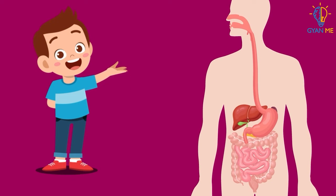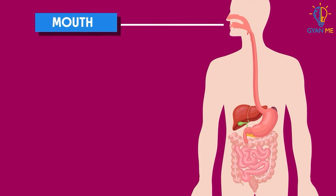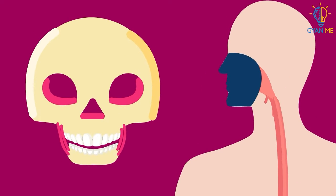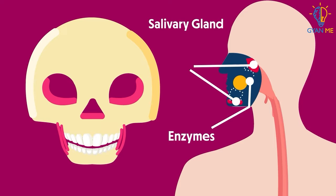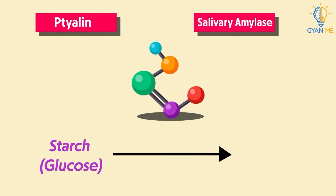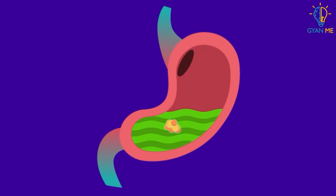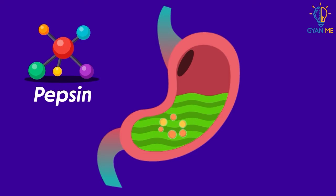We know that digestion starts in the mouth itself. Here, food is chewed and mixed with salivary enzymes like ptyalin, which converts starch into maltose. This partially digested food is called bolus, which then enters the stomach.